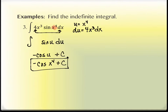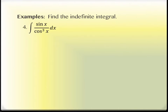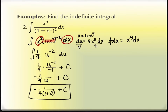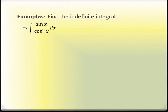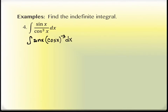This next one has sine and cosine but the interiors are plain x — not powers of x like in previous examples. It looks like a fraction: sine x over cosine cubed x. We rewrite the denominator as cosine of x raised to the negative 3, so it now looks like a product: sine of x times cosine of x to the negative 3. We can identify a function embedded inside another.